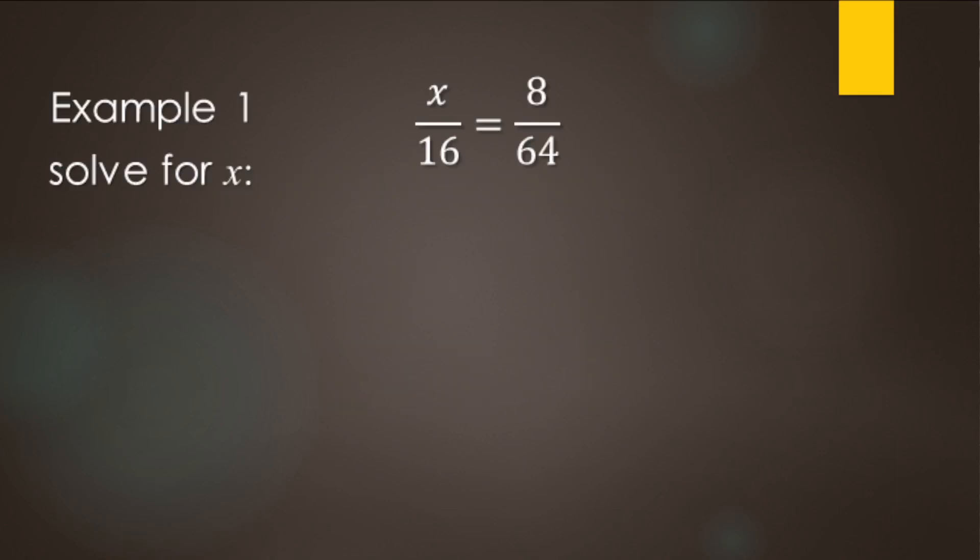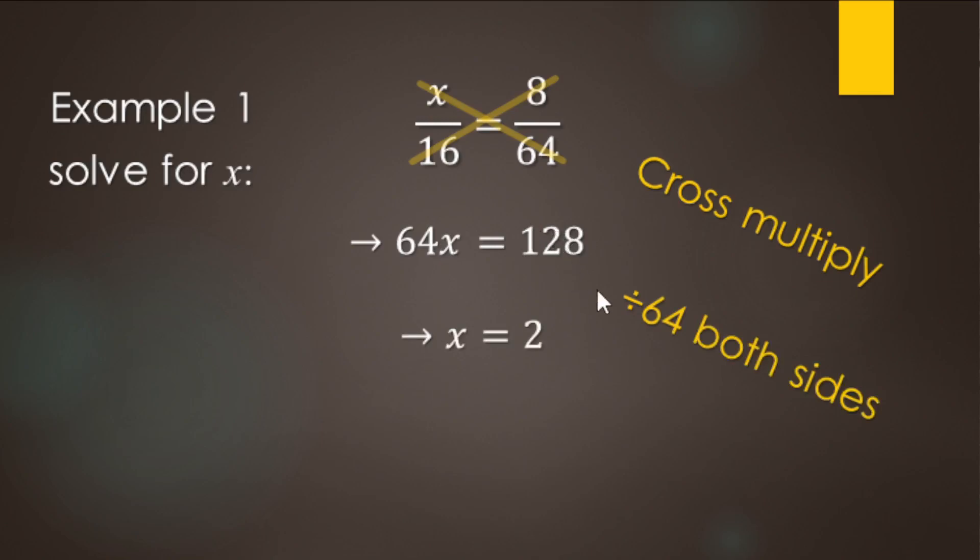We're going to do a review of middle school type solving proportions here. That's cross multiply and divide. So we're doing the cross multiply. That's going to be x times 64 makes 64x. And then 16 times 8 makes 128.